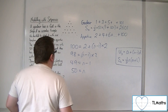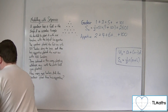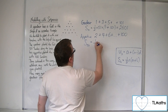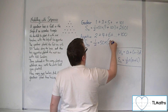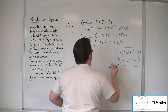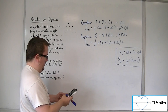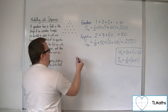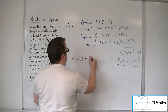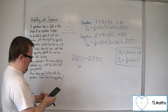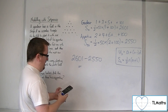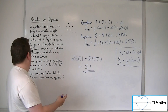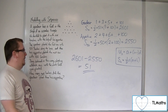Knowing that n is 50, we can say that the sum of the 50 rows the apprentice plants will be (1/2) × n × (first + last): 102 × 50 ÷ 2, which is 2,550. The difference between the two is 2,601 − 2,550 = 51 rose bushes — that is how many more rose bushes the gardener planted than his apprentice.